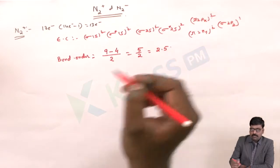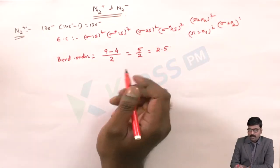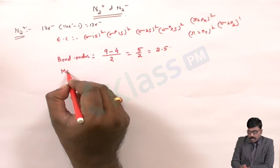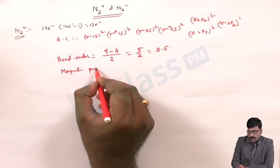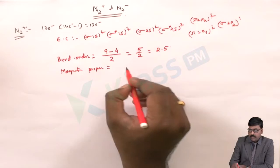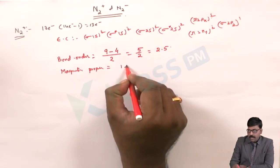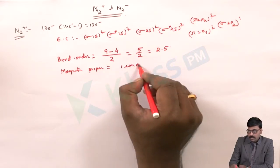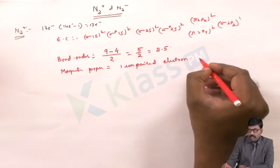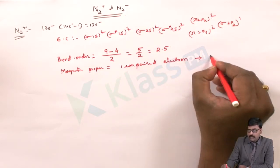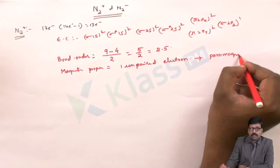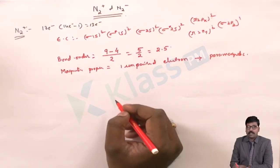The bond order of N2 plus is 2.5. For the magnetic property: it has one unpaired electron, so N2 plus is paramagnetic in nature.